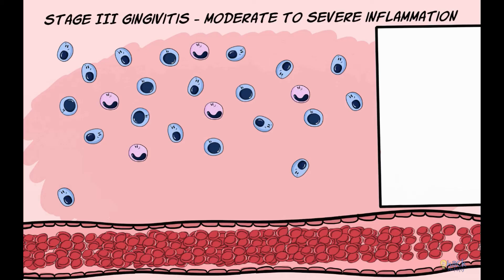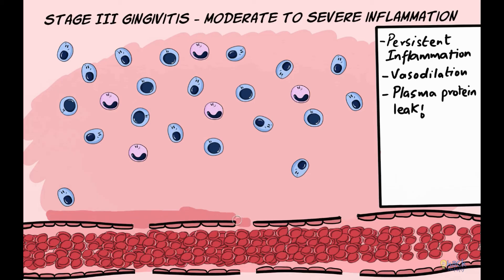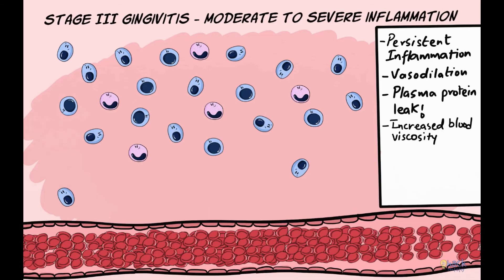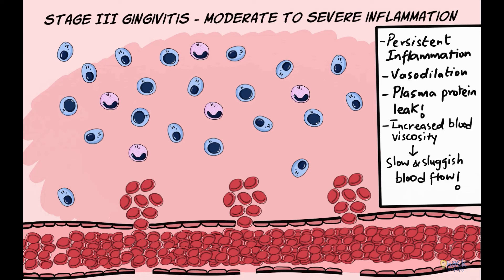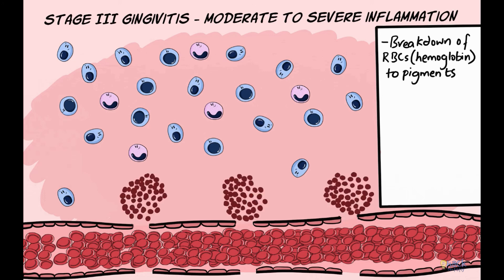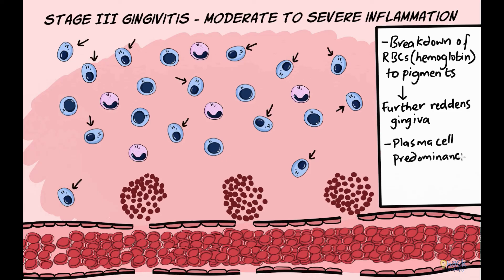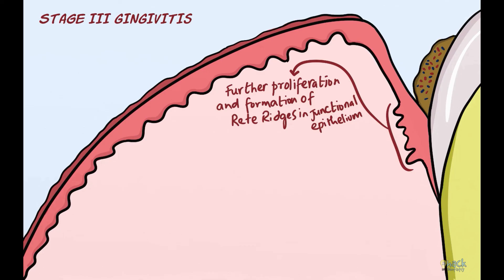Stage 3 is when gingivitis has become chronic and is moderately to severely inflamed. Persistent inflammation, vasodilation, and continuous leak of plasma proteins or exudate from the vessels lead to increased viscosity of blood, resulting in a slow and almost stagnant blood flow. Red blood cells escape into the connective tissue and hemoglobin is broken down into pigment, which may further redden the already erythematous gingiva. This stage is characterized by intense chronic inflammation predominated by plasma cells, with more pronounced proliferation of rete ridges from the junctional epithelium into the connective tissue and further destruction of collagen.